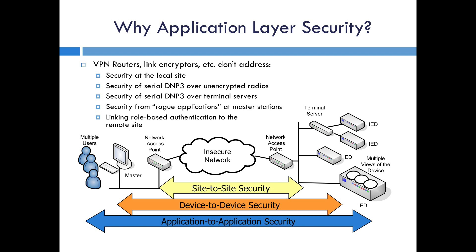There are three types of security commonly deployed in communication networks today. First is site-to-site security, which includes the use of a virtual private network, or VPN, and protocols such as IPsec to secure the link between two locations — for example, between a master station and a substation. It does not secure the networks at those locations, and physical security measures like locks and guards are still necessary. Second is device-to-device security, which includes protocols such as Transport Layer Security, or TLS, to secure the complete TCP connection between two devices, similar to accessing your bank through the internet. However, TLS only works on IP networks and is lost if a message is forwarded over radios or serial links. It also does not address rogue software applications installed on a device.